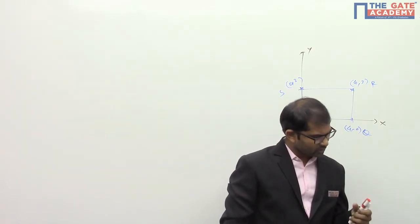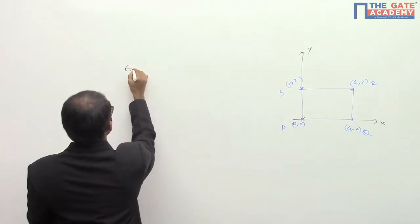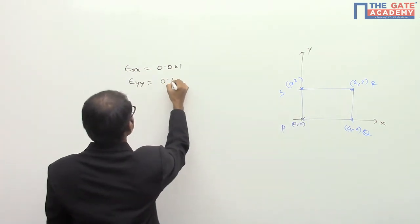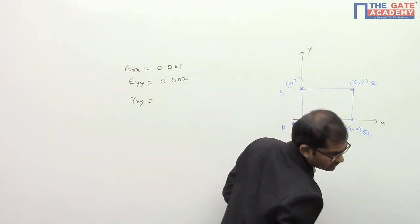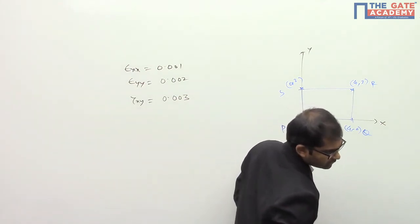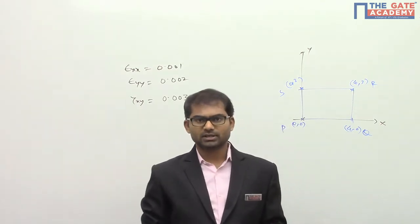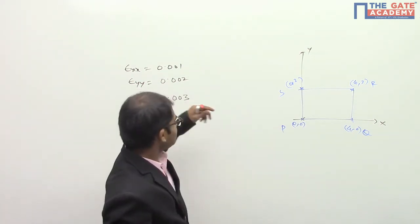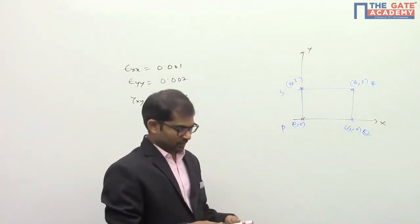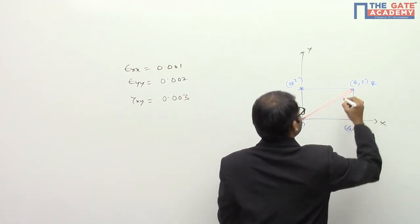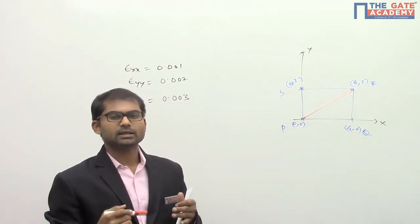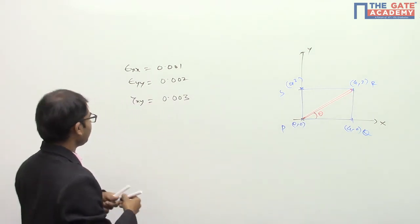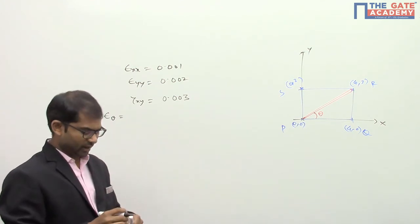The rectangle is subjected to uniform strains: epsilon_xx = 0.001, epsilon_yy = 0.002, and gamma_xy = 0.003. They are asking for the deformed length of the elongated diagonal. Due to these strains, we need to find the strain along the diagonal. Since the diagonal is at an angle theta, we can say they are asking for epsilon_theta — the normal strain along the diagonal direction.